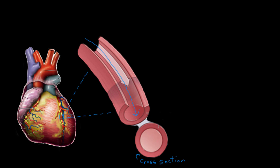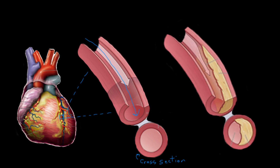But when you start getting atherosclerosis, things can get a little bit different. Your coronary artery might start to look something like this. We can see there's a pretty big difference between the first vessel, the nice clean one, and the second vessel here — the atherosclerotic, fatty plaque vessel. All this yellow stuff is gross fatty plaque that's been deposited into the vessel wall.